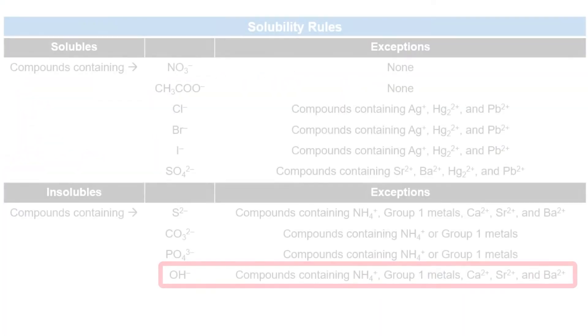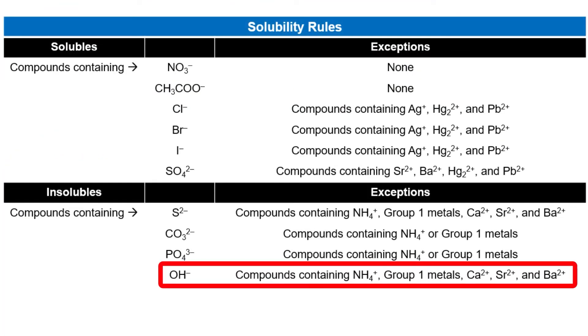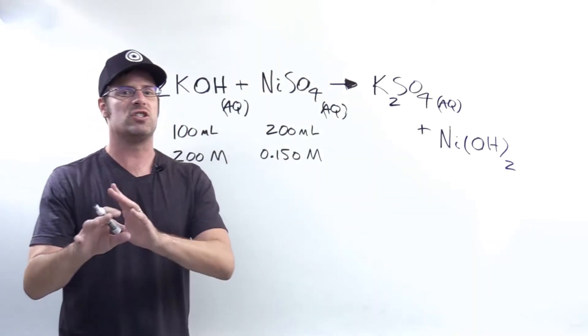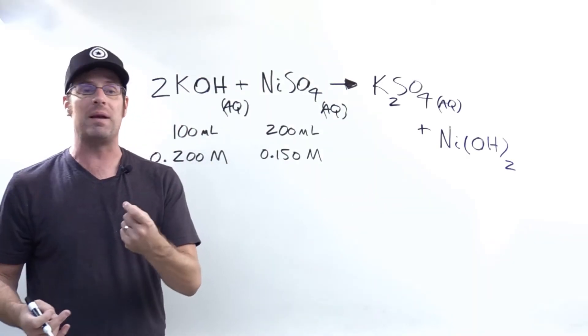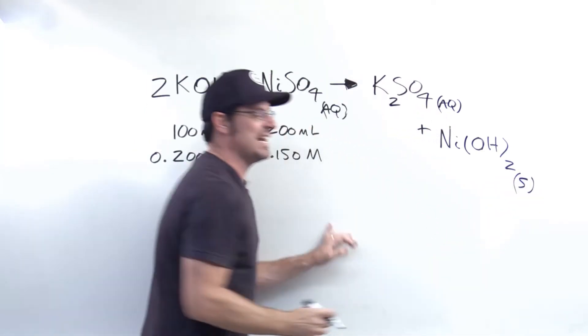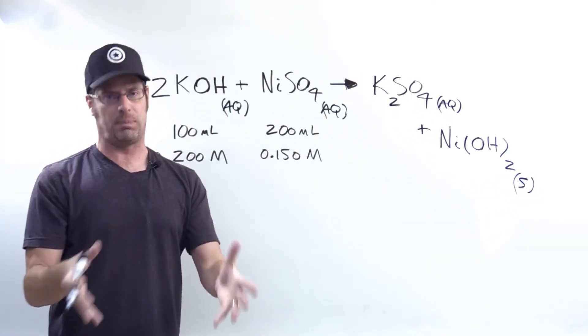Now what of nickel hydroxide? Again, going to the hydroxides, being in the bottom half insoluble section of the table, all hydroxides are insoluble except for the exceptions written in the bottom right-hand section, none of which are nickel. So nickel hydroxide is not an exception to the insolubles, which means that it will be insoluble. So we write next to it S to indicate that it is a solid insoluble precipitate.